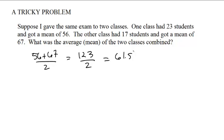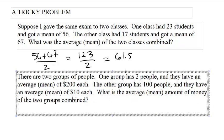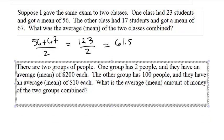Let's try another example to see why that doesn't work. Suppose you have two groups of people. One group has 2 people and they have an average of $200 each. The other group has 100 people and they have an average of $10 each. What's the average amount of money of the two groups combined?